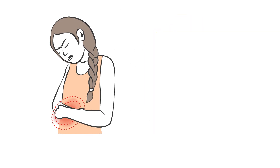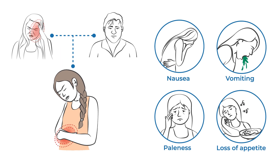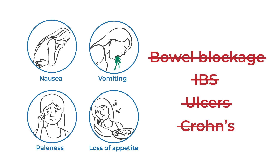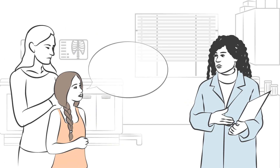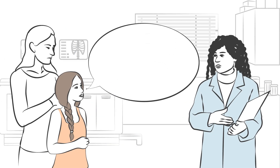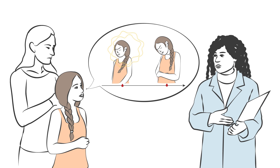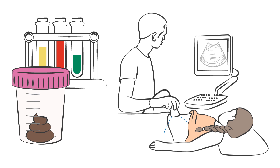Abdominal migraine is diagnosed based on a thorough history of both the patient and family, symptoms, and exclusion of other causes. It is helpful to let a healthcare provider know if the patient has had an aura prior to an attack. A provider may order lab tests, stool samples, and an abdominal ultrasound to rule out other possible diagnoses.